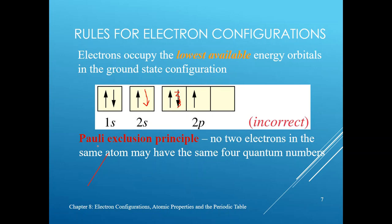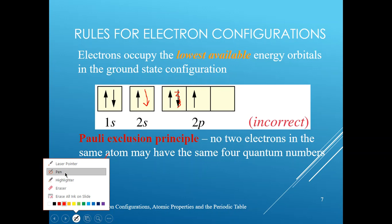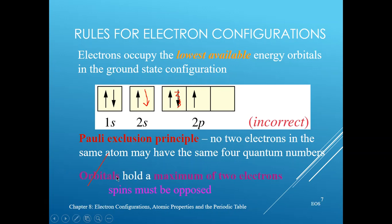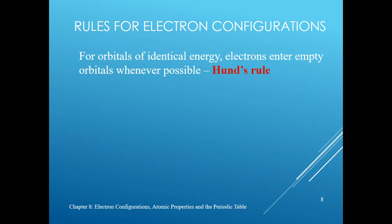The Pauli Exclusion Principle states that no two electrons in the same atom may have the same set of four quantum numbers. The ultimate consequence of this rule is that orbitals will hold a maximum of two electrons and the spins must be opposed. If you have two electrons occupying the same orbital, the spins must be opposed, and each orbital can have no more than two electrons.